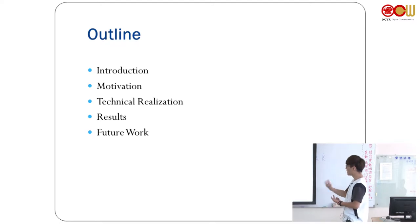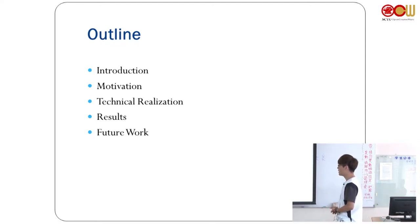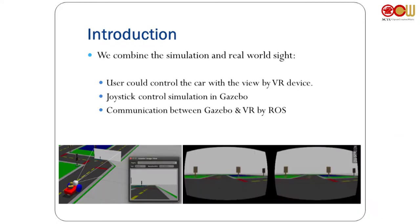For the outline, I'll first give an introduction, then tell you our motivation, explain our technical realization, show results, and at last describe our future work. We want to build a system where you can operate in simulation and also in virtual reality, because sometimes we want to get a human feeling from the experience.